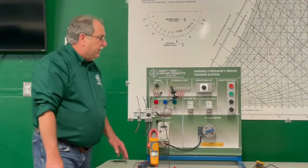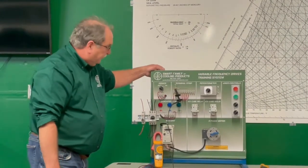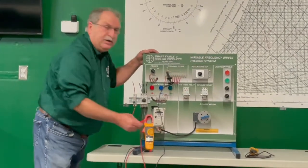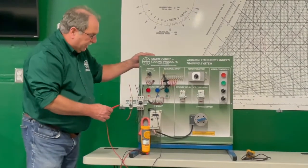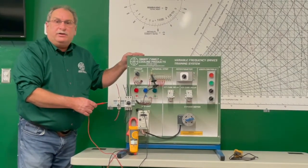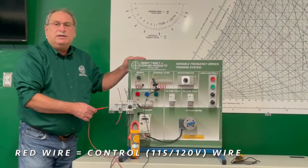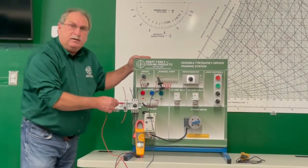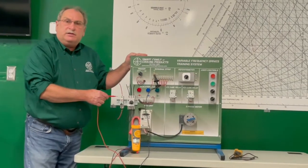So when you're using a meter, you always want to check for power on a known circuit. In this case, on our units, we use red wire to indicate the control circuit voltage. Typically, that's 115 volts.